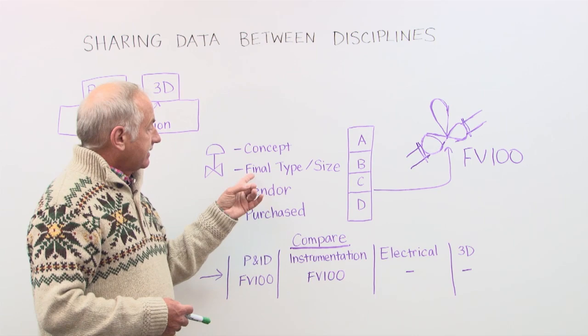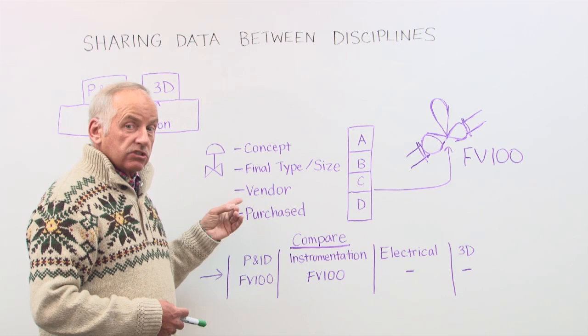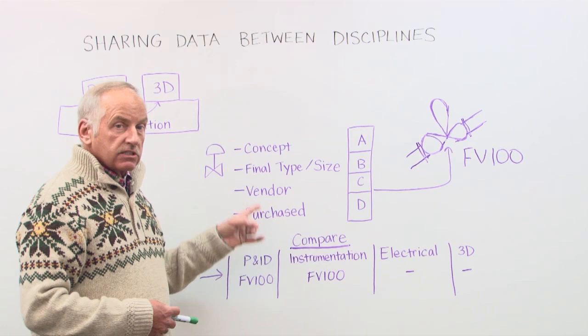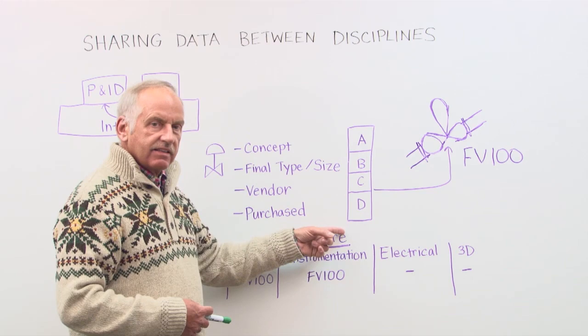Then you decide which vendor you're going to use, and then finally you're going to buy the thing to install it. These are basically stages. I was thinking if we are able to give these different phases an indicator, I just call them A, B, C, D.